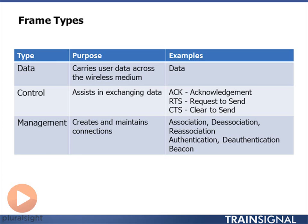In 802.11, the initial standards defined sending one frame at a time — you send one frame, get an acknowledgement, send another frame, get an acknowledgement. Whoever calculated the shorter backoff period would transmit first, and then again whoever calculated the shorter backoff period would send their frame. We share the RF medium using these backoff periods, but it's not possible to hog the whole medium to send a big video stream because access is granted one frame at a time.